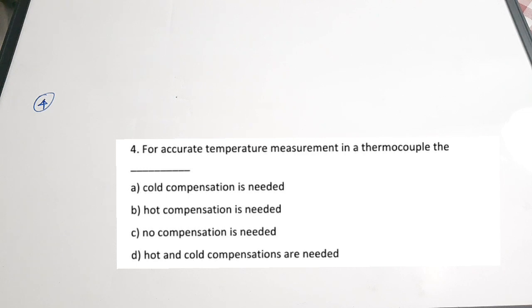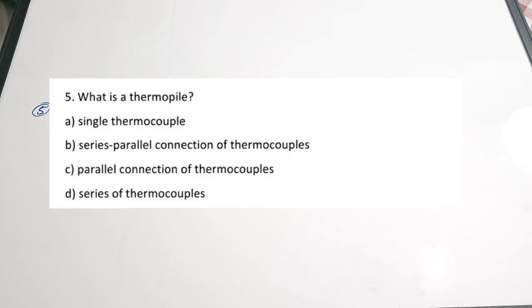Question 4: for accurate temperature measurement in a thermocouple — A cold compensation is needed, B hot compensation is needed, C no compensation is needed, D hot and cold compensations are needed. Correct answer is A — cold junction temperature compensation is done for accurate measurement. Question 5: what is a thermopile — A single thermocouple, B series-parallel connection of thermocouples, C parallel connection of thermocouples, D series of thermocouples. Correct answer is D — a thermopile is a series connection of thermocouples.